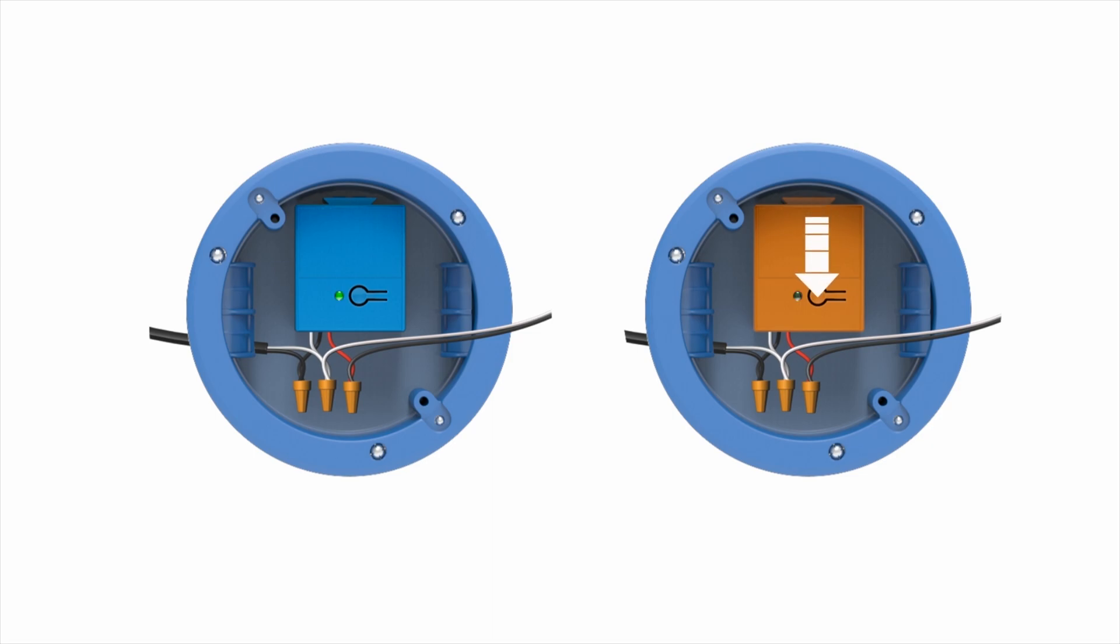Next, press and release the pair button on the controller I want to add to the group. The LED indicator on the second controller will blink green and the first controller will blink alternating red and green.